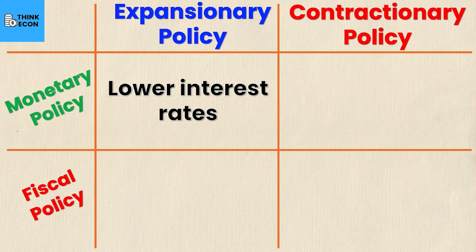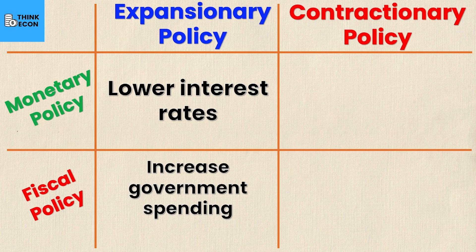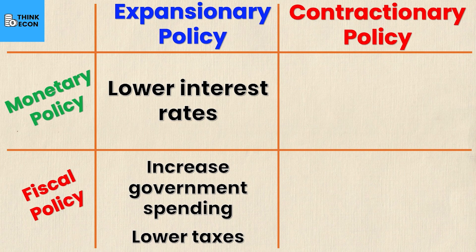What can the government do using fiscal policy to promote expansionary policy? First, they could increase government spending — if government spending increases, total GDP will increase, and there will also be societal benefits like additional social programs and government transfers putting more money into the economy. Second, the government could lower taxes. Lower taxes incentivize spending, and your real income will inevitably be higher, giving you more propensity to consume.